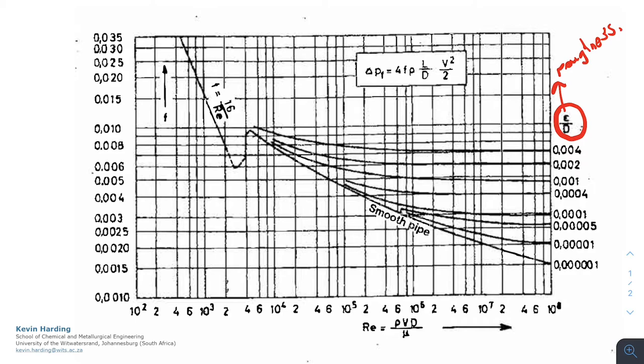We'll get to a different graph later on, but the e you're going to read from a table, or you will be given, and it's going to be in units of length divided by the diameter of the pipe, which is again in units of length. So we then have a dimensionless value for e over d.